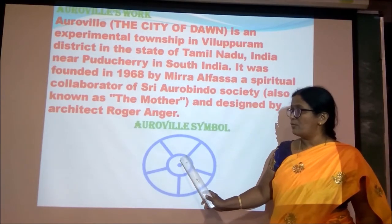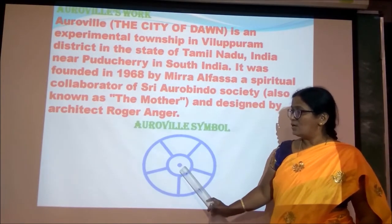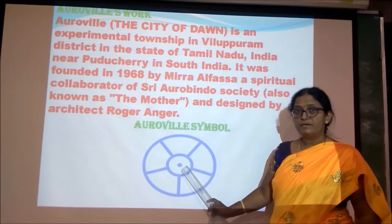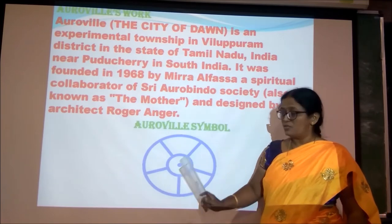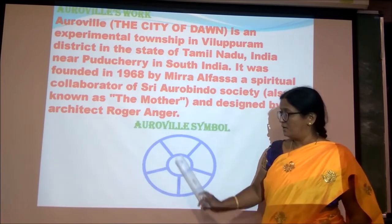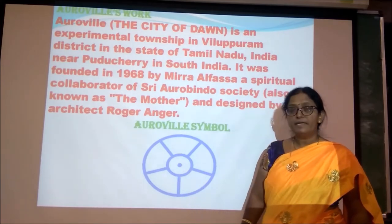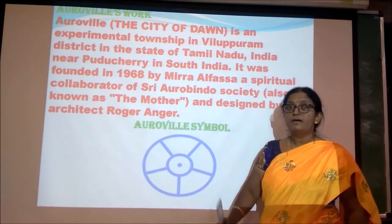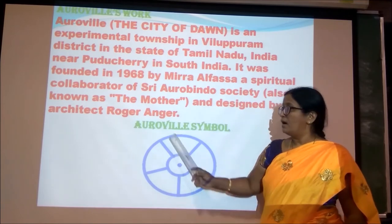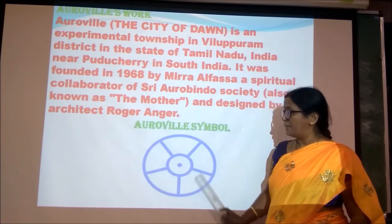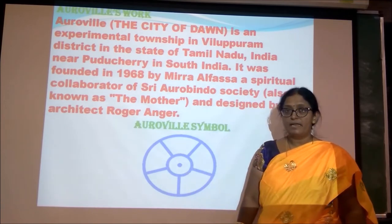This is Auroville's symbol. The dot at the center indicates the supreme. The inner circle indicates our creation. And the petals indicate the realization.